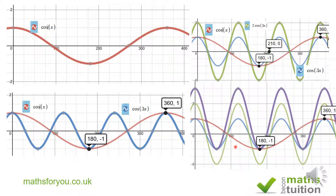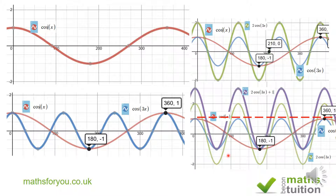Now I produce the graph of 2·cos(3x) + 1 — the purple graph. We shift the line of symmetry from y = 0 up to y = 1, which is one unit upward. That's why we add plus one, moving from zero to plus one. So the purple graph is y = 2·cos(3x) + 1.